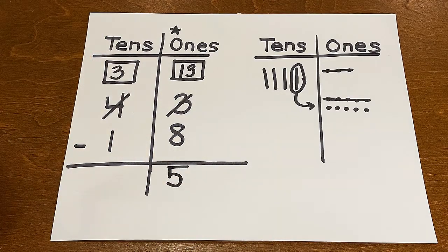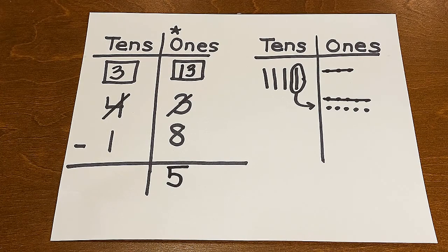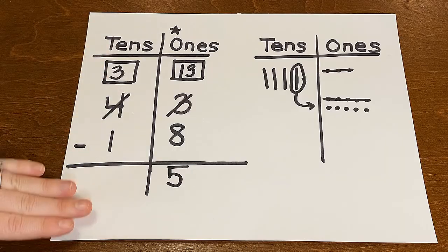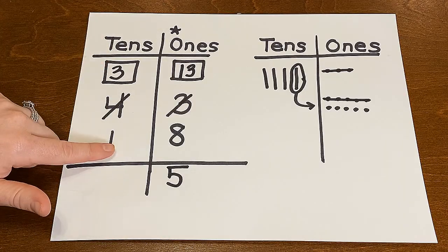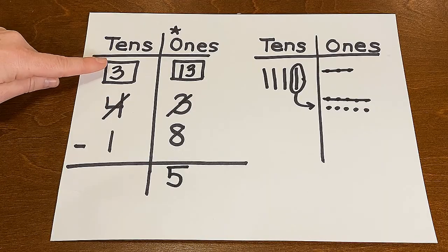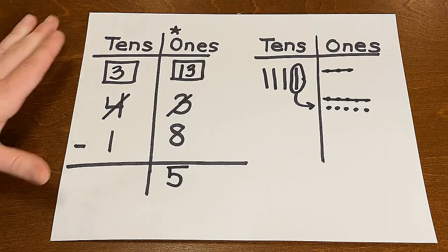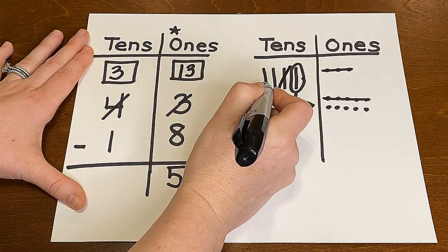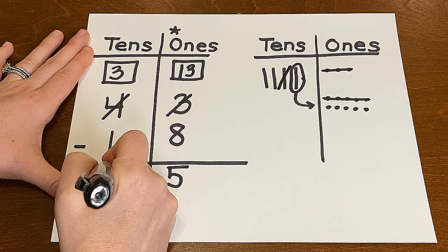Are we done? No, we're not. We need to move over into the tens column now. So again, reading it top to bottom. Three take away one. Remember, I'm reading the three because this number changed. I don't have four tens. We now have three tens. So three take away one. How many are left? One, two. Record your two.